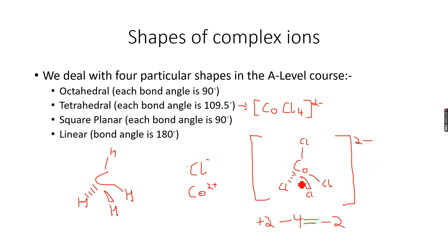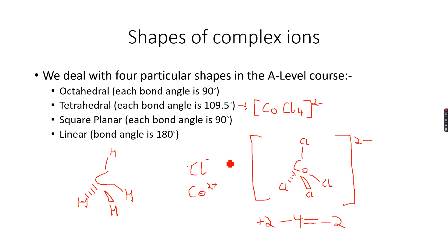This is a tetrahedral complex ion — all consecutive bond angles are 109.5 degrees. We learned this in organic chemistry with sp³ hybridization, where sp³ hybridization leads to 109.5 degrees. We learned this at AS level, so all bond angles here are 109.5 degrees, making this a tetrahedral shape.